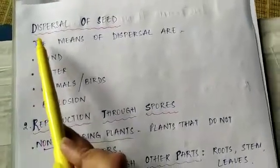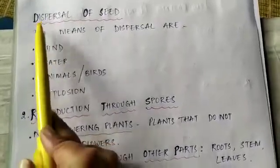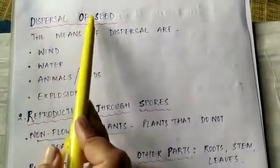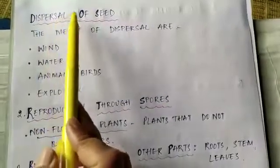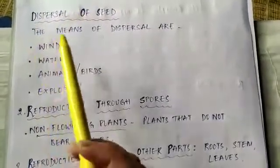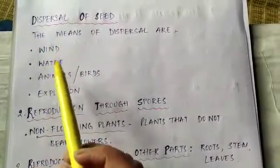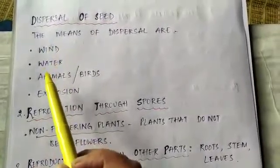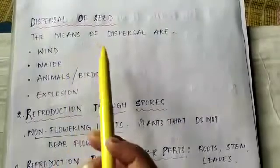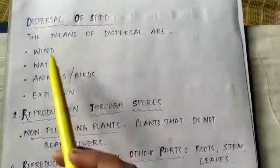The next topic we will see is dispersal of seed. What is dispersal of seed? The seeds are dispersed from the mother plant — that is known as the dispersal of seed. Now, overcrowding of seeds would cause their death, so the seeds need to be dispersed so that they can grow successfully. And there are different means of dispersal.